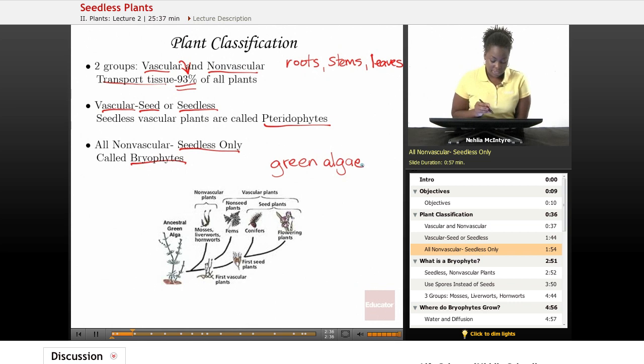we've evolved these different structures to help plants to survive all over the world, which is why we have these different groups, such as the nonvascular plants and the vascular plants without seeds and the vascular plants with seeds.